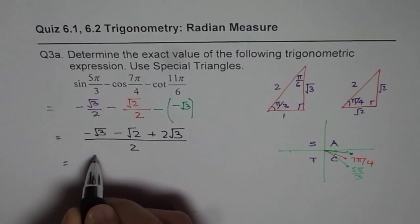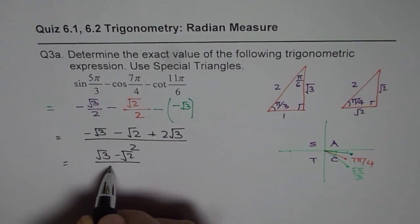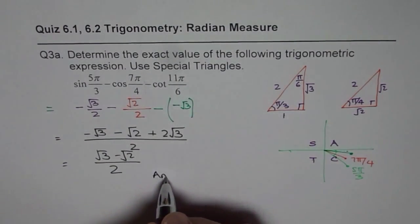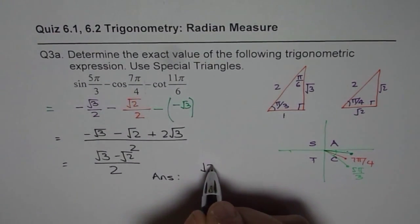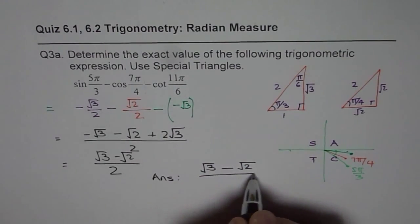You can simplify. So, we get (√3 - √2)/2. So, the exact value or our answer for this question is (√3 - √2)/2.